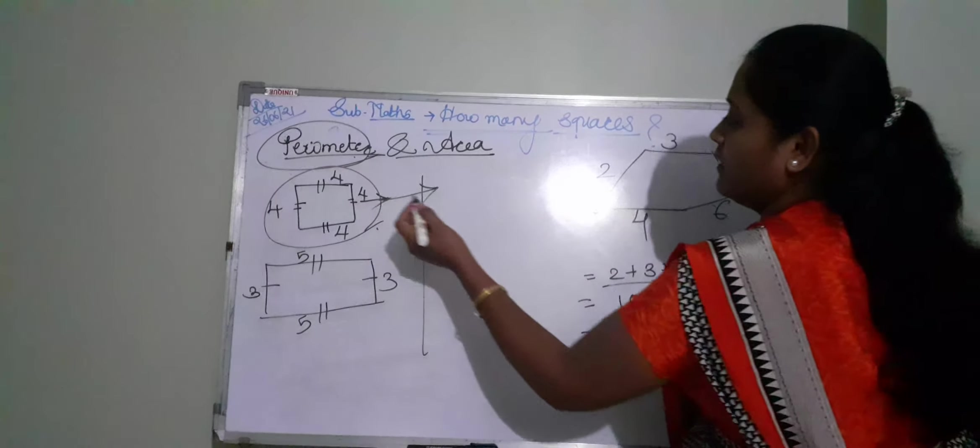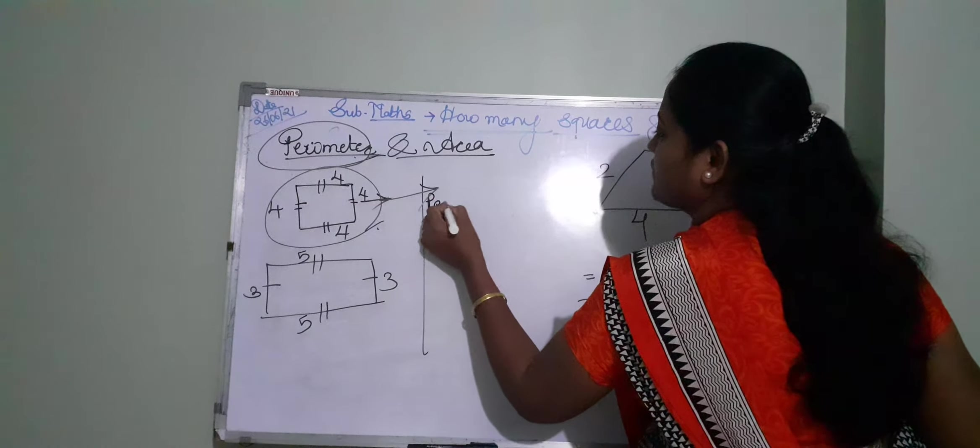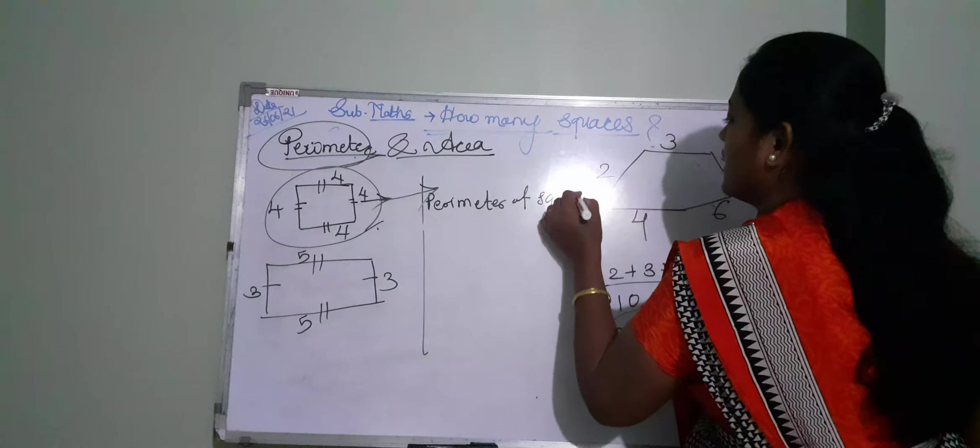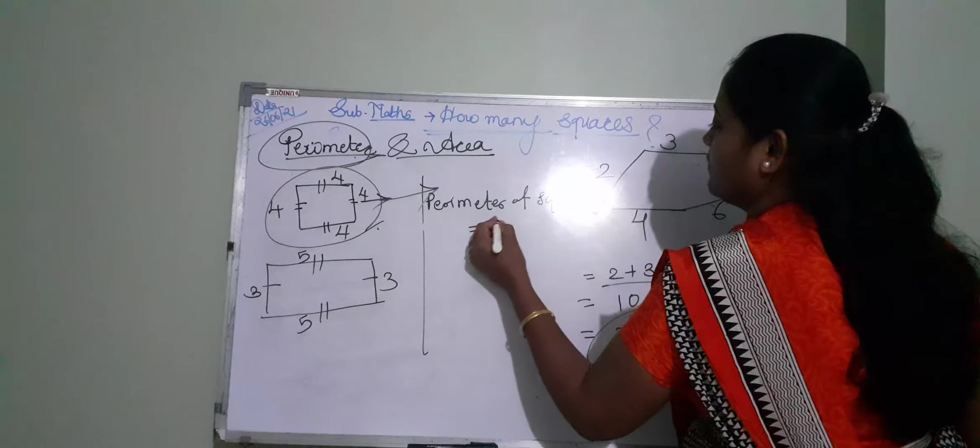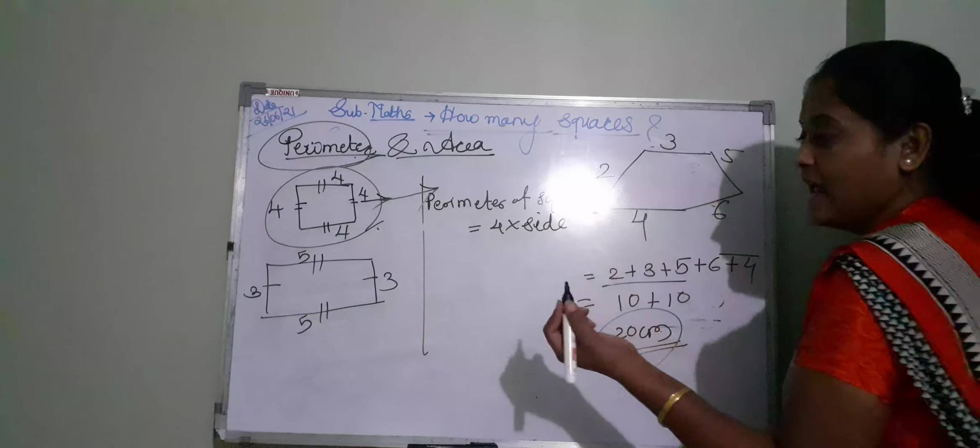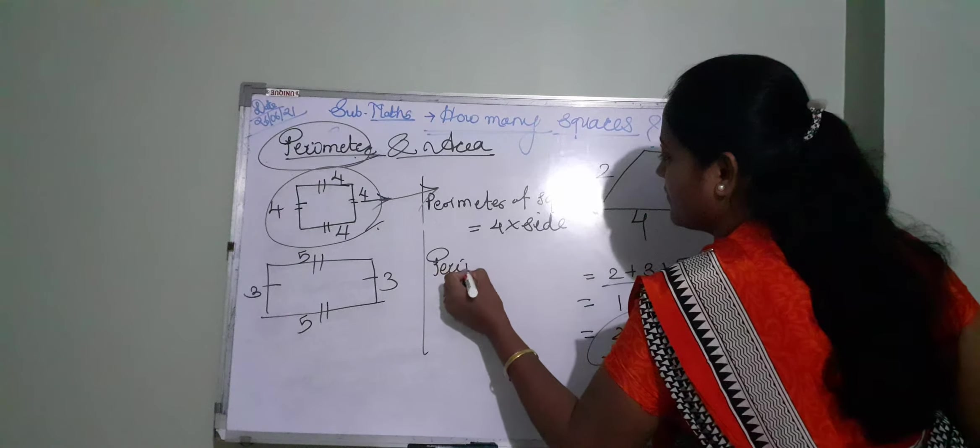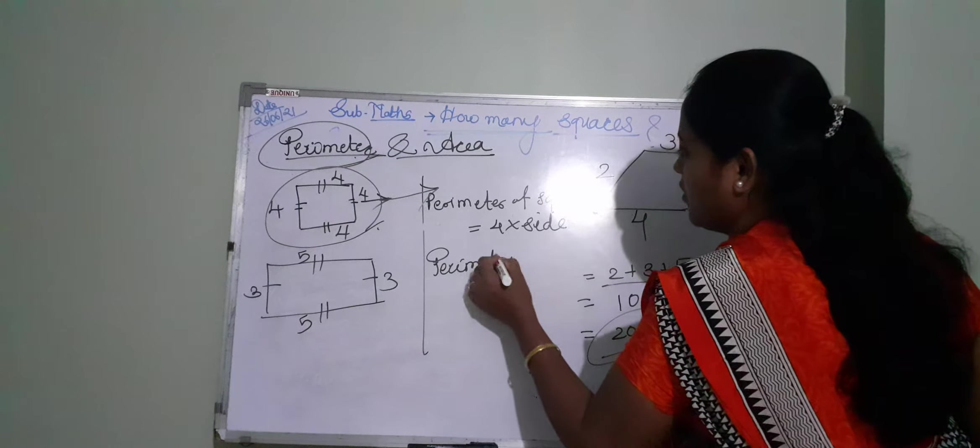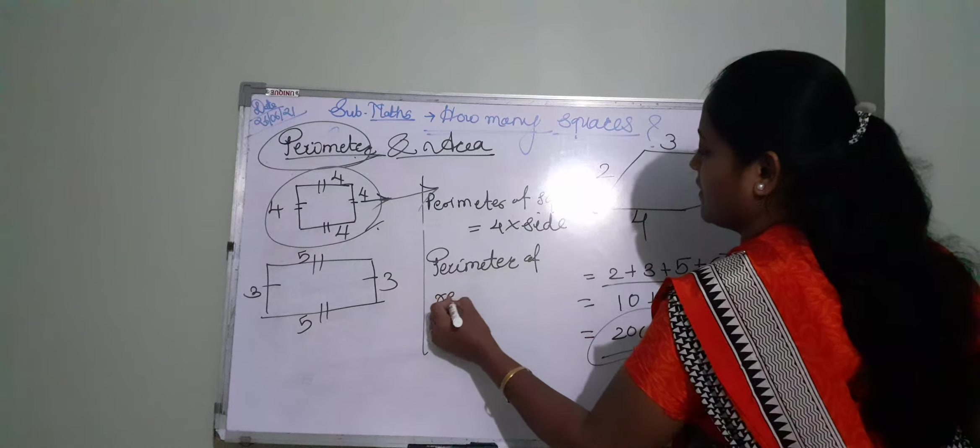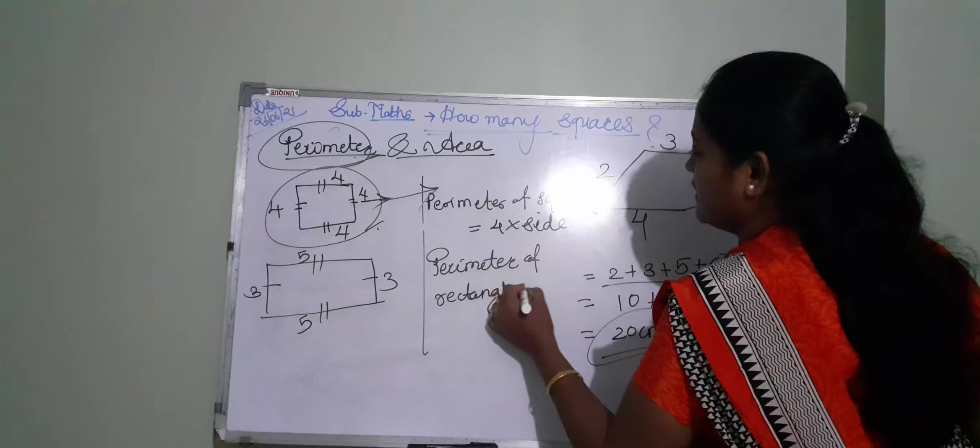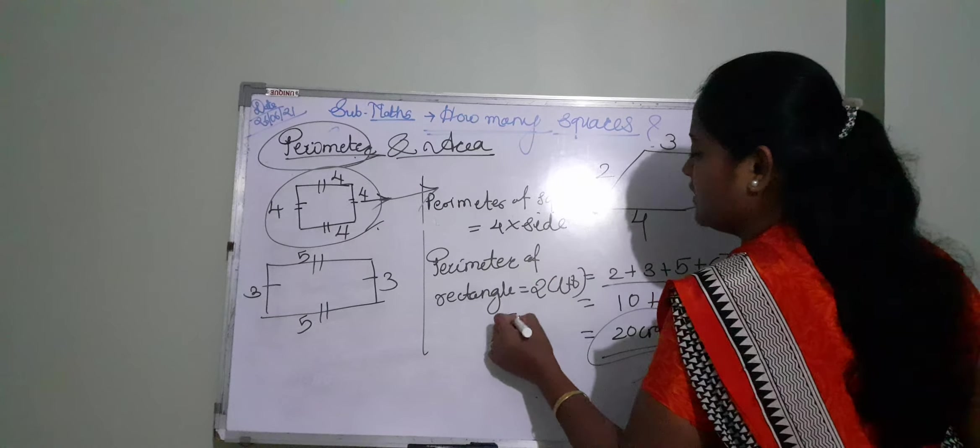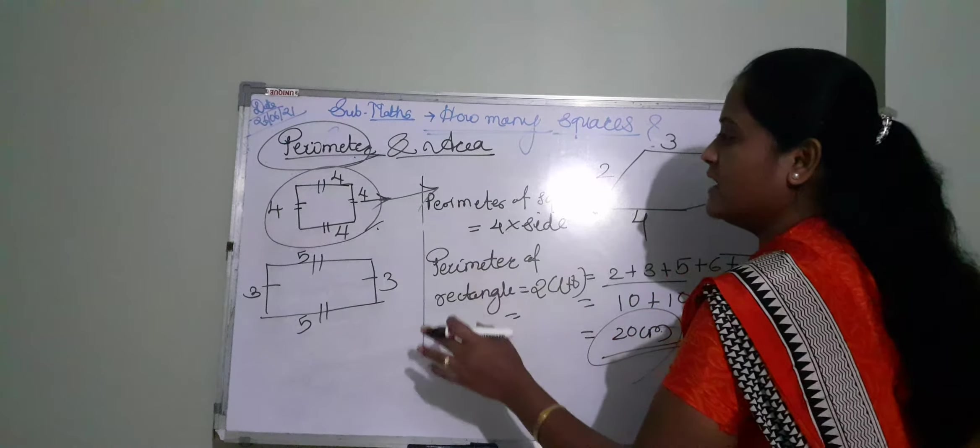Also some formulas are given. Perimeter of square is 4 multiplied by side. And perimeter of rectangle is 2L plus 2B, or 2(L plus B). L means length and B means breadth.